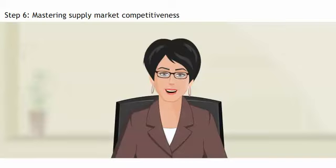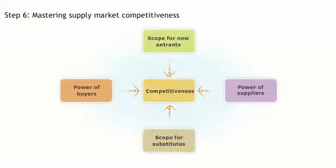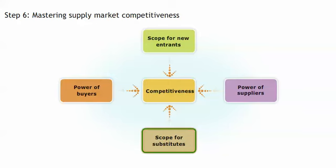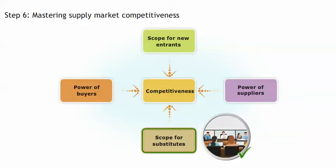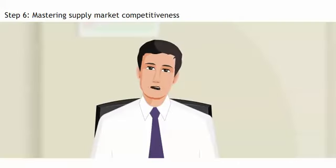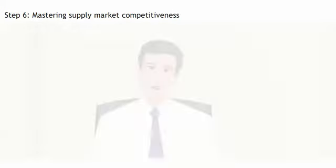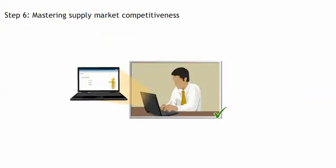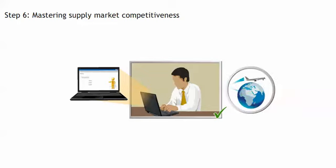Finally, scope for substitutes stands for the availability of substitutes. An example is to have virtual meetings instead of travelling around the globe. Another example is to use e-learning, which will require less travel for staff to attend class training.